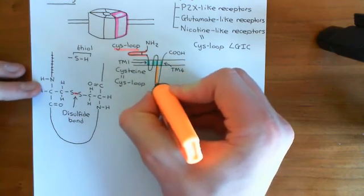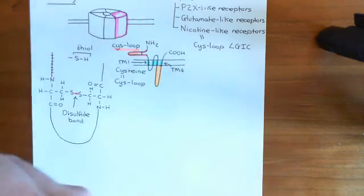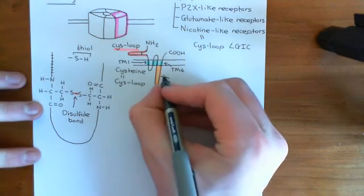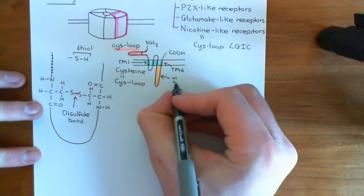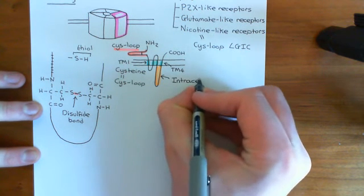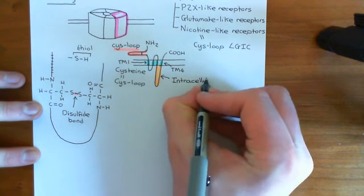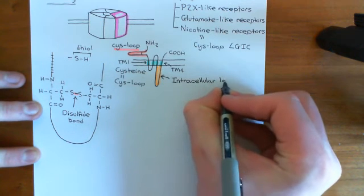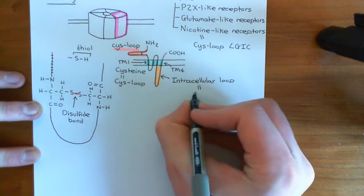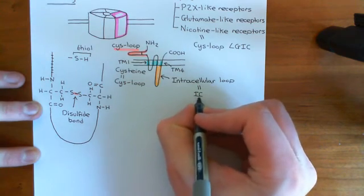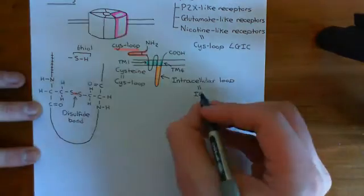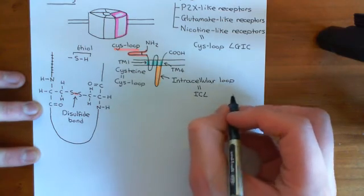We also have the loop in between TM3 and TM4, which is known as the intracellular loop, often abbreviated to ICL — intra-cellular loop.